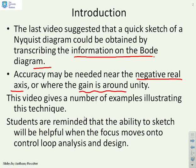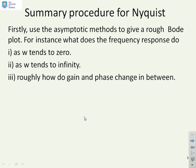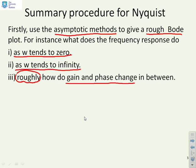Students are reminded that the focus on sketching is mainly because you'll find it useful when ultimately we move to control loop analysis and design. As a reminder of the basic procedure: firstly, use the asymptotic methods used in the Bode plots to give yourself a rough Bode plot. You need to know what happens as omega tends to zero, what happens as omega tends to infinity, and roughly how gain and phase change for frequencies in between — linked to the trend information given at the end of the previous video.